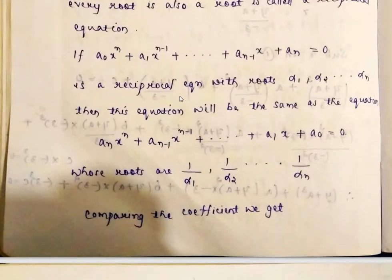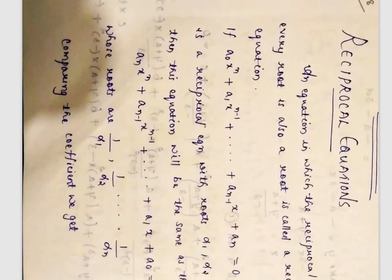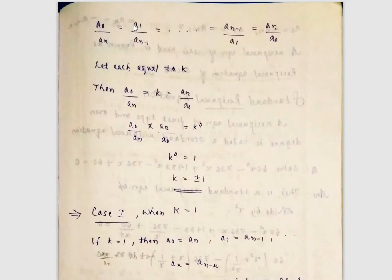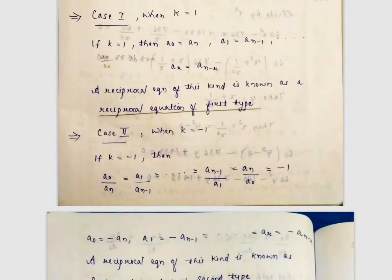Comparing the coefficients, we get: a₀/aₙ = a₁/aₙ₋₁ = ... = aₙ₋₁/a₁ = aₙ/a₀. This means a₀ = aₙ, a₁ = aₙ₋₁, and so on. That is the key point.